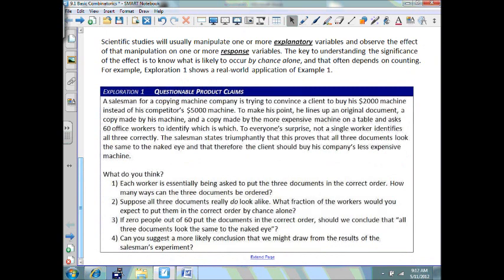A salesman for a copy machine company is trying to convince a client to buy his $2,000 machine instead of his competitor's $5,000 machine. To make his point, he lines up an original document, a copy made by his machine, and a copy made by the more expensive machine on a table, and asks 60 office workers to identify which is which. To his surprise, not a single worker identifies all three correctly. The salesman triumphantly states that this proves that all three documents look the same to the naked eye, and that therefore the client should buy his company's less expensive machine.